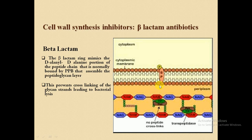The beta-lactam ring mimics the D-alanyl-D-alanine portion of the peptide chain that is normally bound by penicillin-binding proteins, which assemble the peptidoglycan layer. You can see here the periplasm and transpeptidase — transpeptidase is the name of the enzyme. There is no peptide cross-link formed, so beta-lactam antibiotics prevent the cross-linkage of the glycan strands, leading to bacterial lysis.